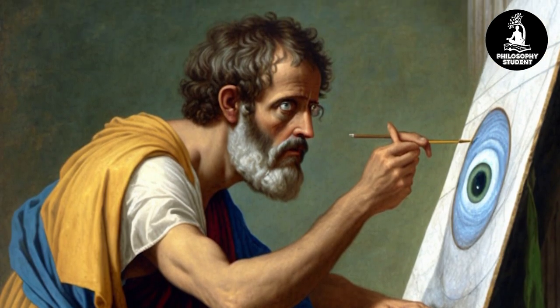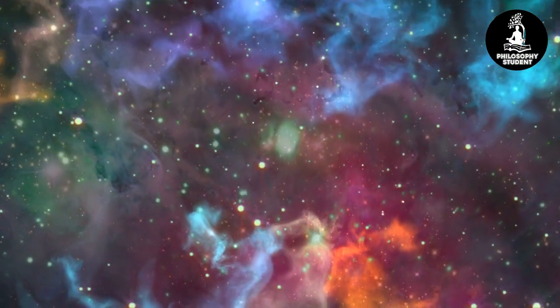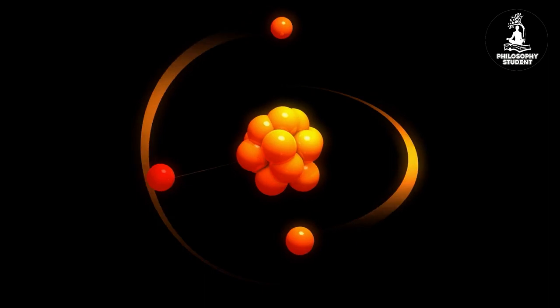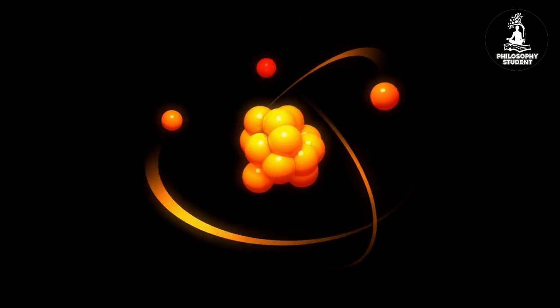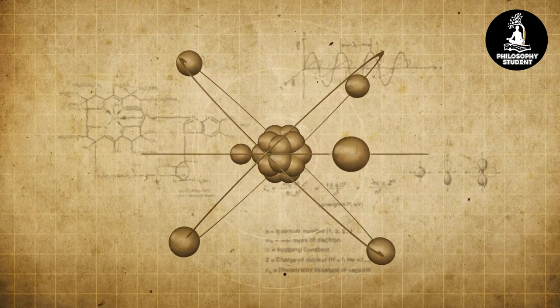The atomist doctrine ascribed to Leucippus holds that the universe consists of just two elements: the full or solid, and the empty or void. Both these elements are infinite and constitute all that is.